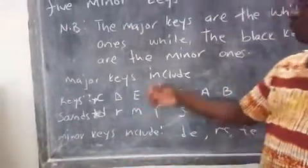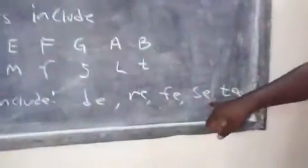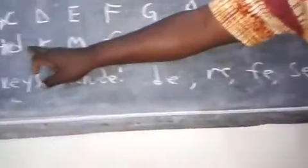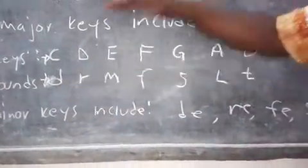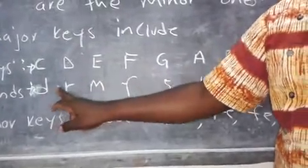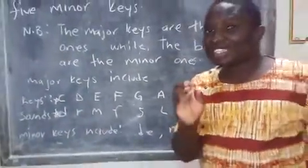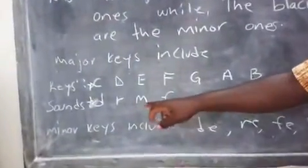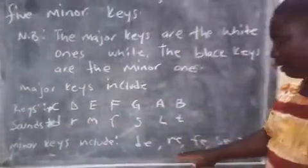And then the minor keys, which are the black ones, they will include DI, RI, FI, SI, and TO. These sounds are called minor because they are flats. They are in between. When we look at the music scale that we drew last time — we drew a ladder going up and put the sounds of music — between DO and RE, there is also a sound that is not lost. That sound between DO and RE, if you were to play those two keys at the same time, there is that other sound we create. So instead of DO, RE, it is DO, DI, RE. Those are the minor keys.